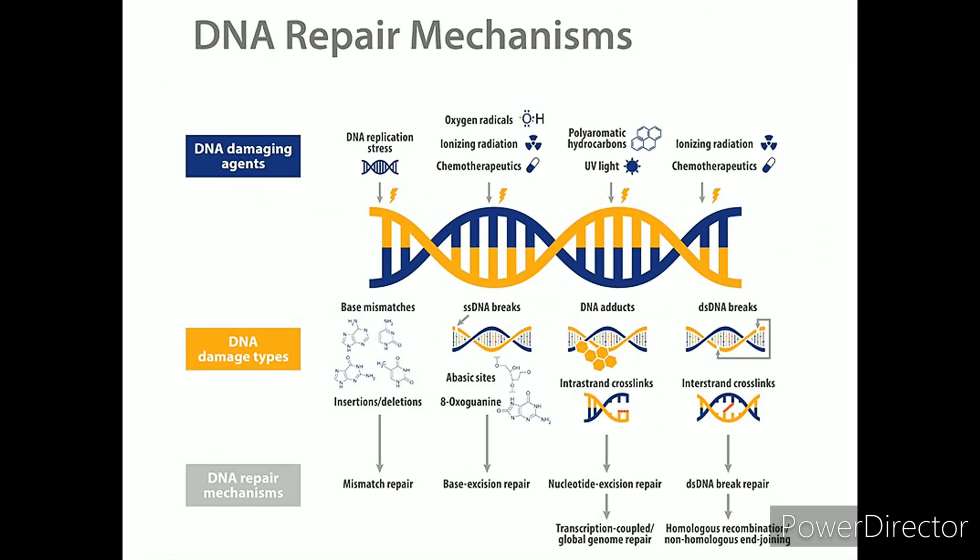Causes of Mutation. Errors in DNA Replication. On very rare occasions, DNA polymerase will incorporate a non-complementary base into the daughter strand. During the next round of replication, the misincorporated base would lead to a mutation.